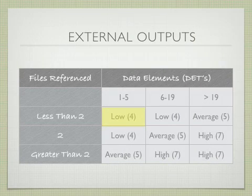Again, a low EO is four function points. An average is five function points. The average is across the diagonal and high is to the right-hand quadrant.